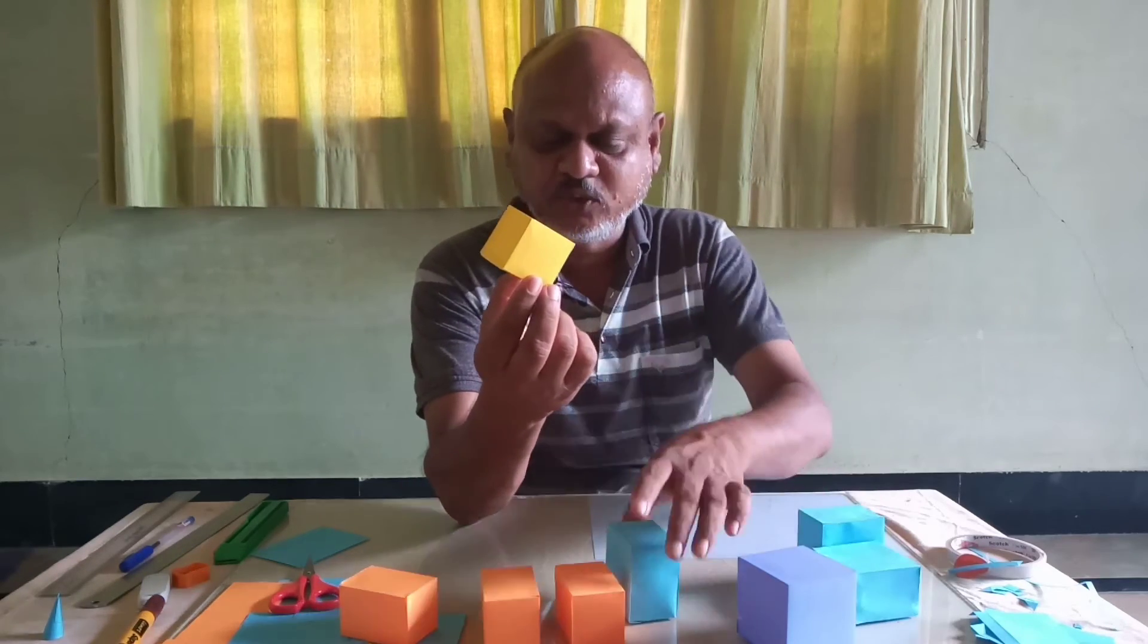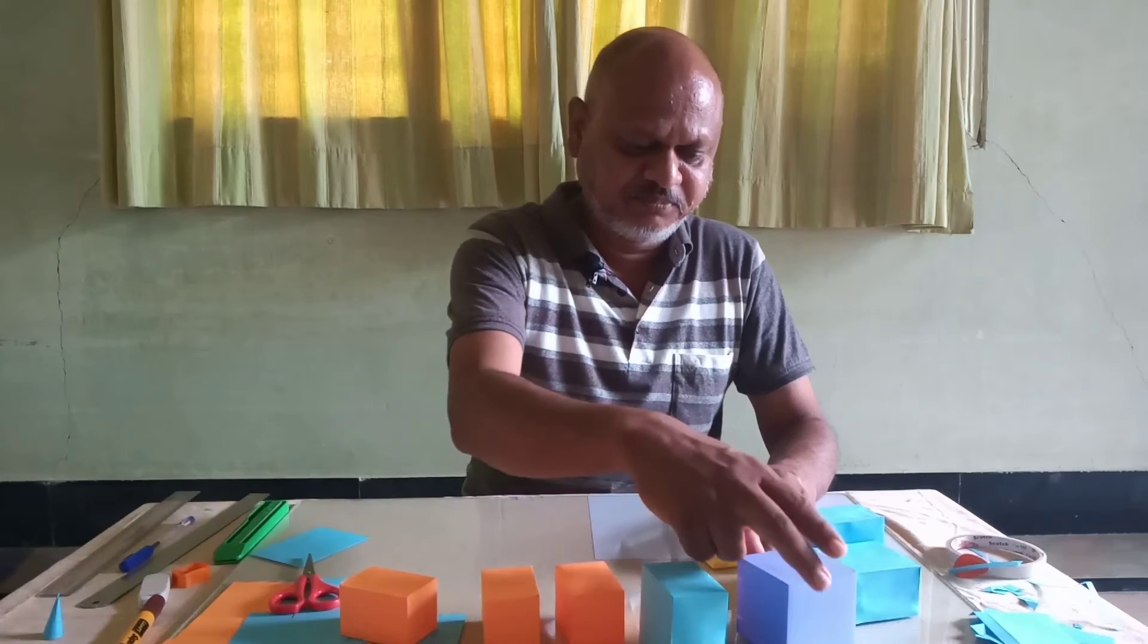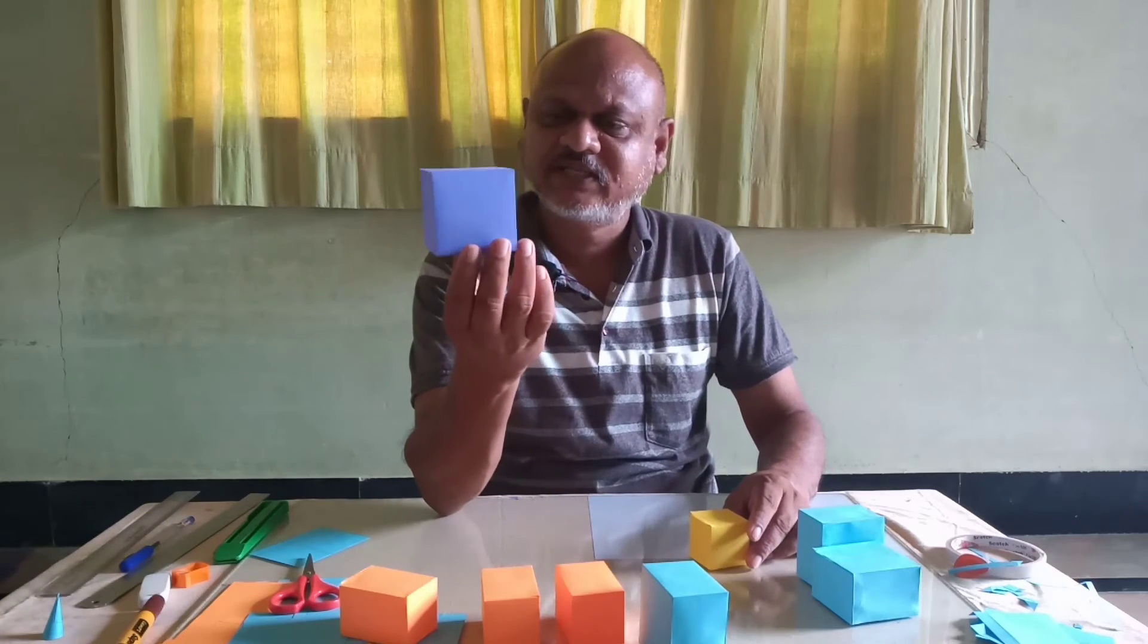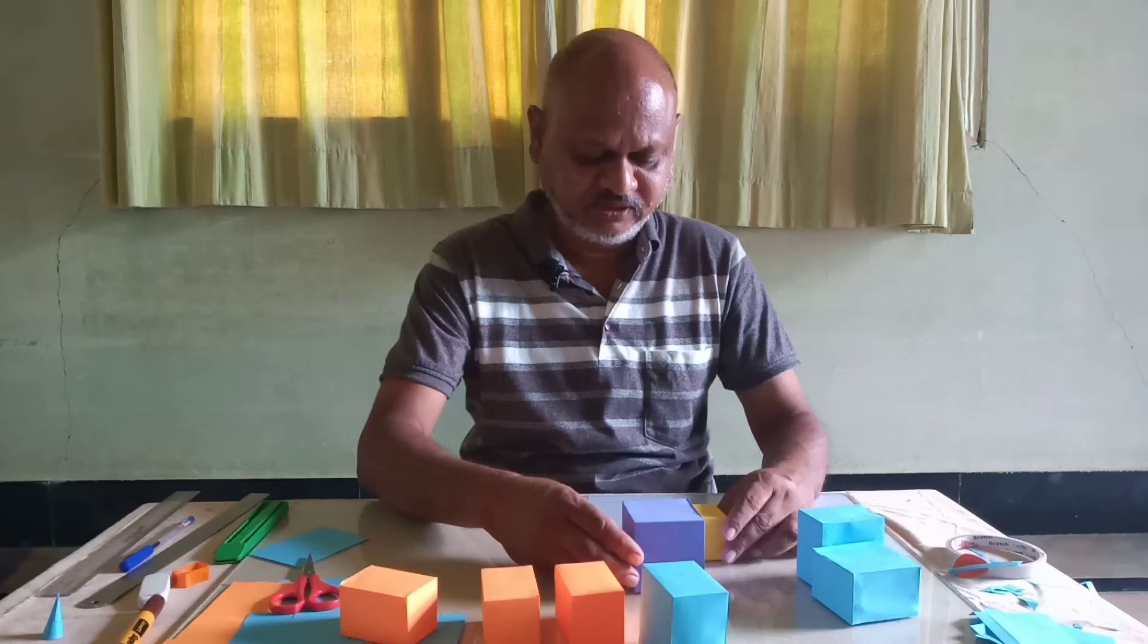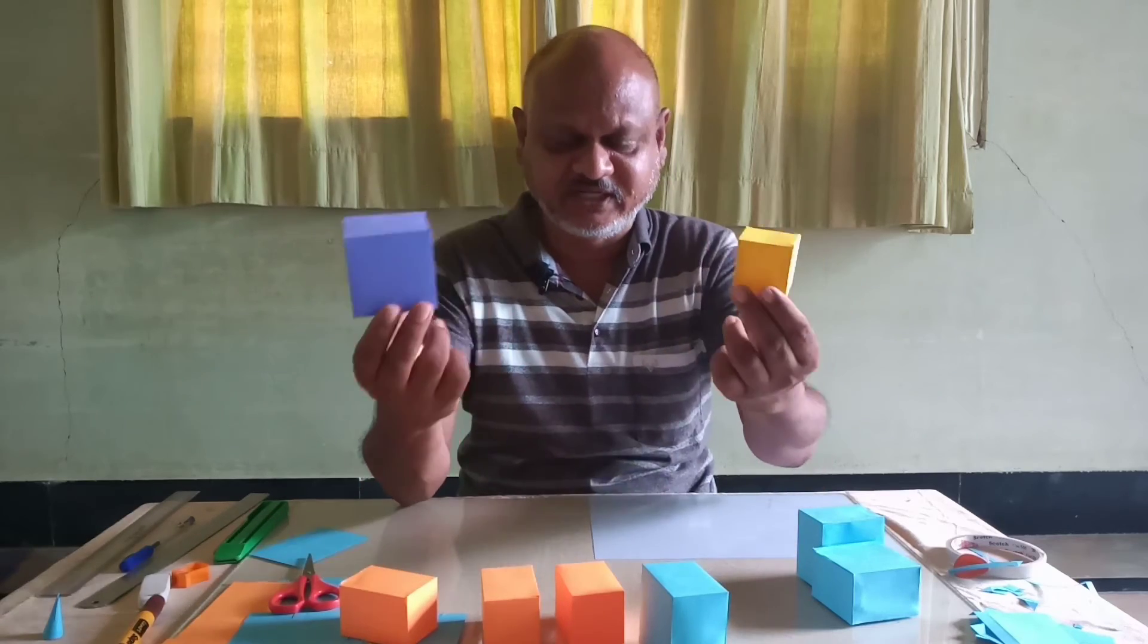So it's an A cube. And this big one I'm calling it as B cubed. Right? So they're of two different colors.